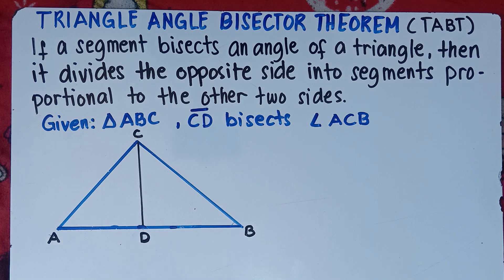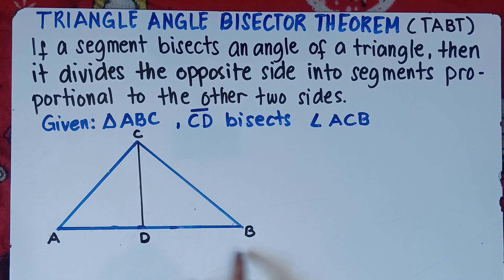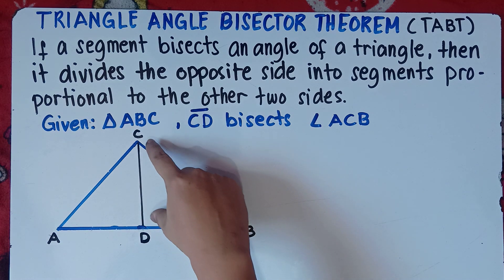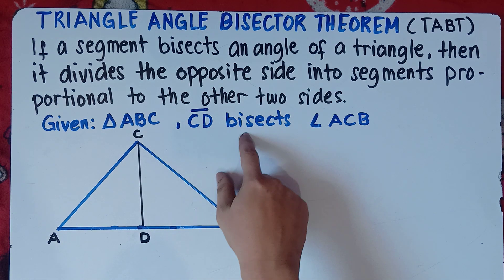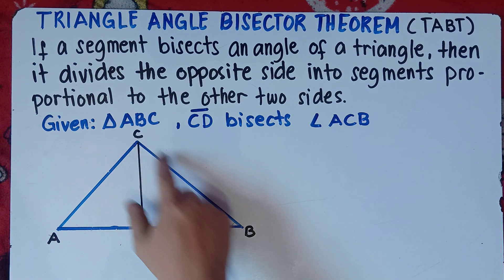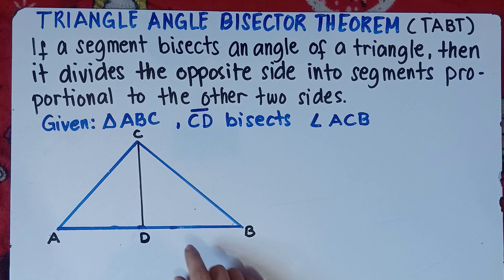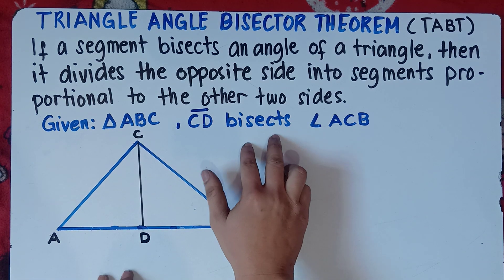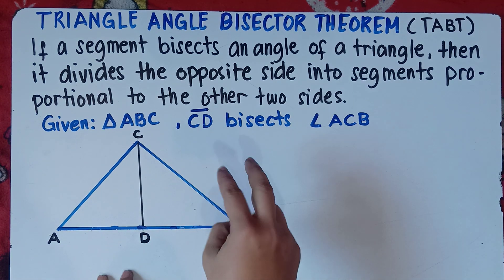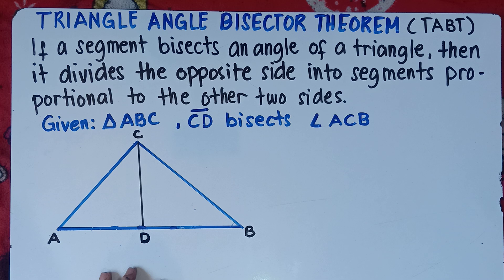If a segment bisects an angle of a triangle, then it divides the opposite side into segments proportional to the other two sides. The word bisect means you cut an object into two equal parts.